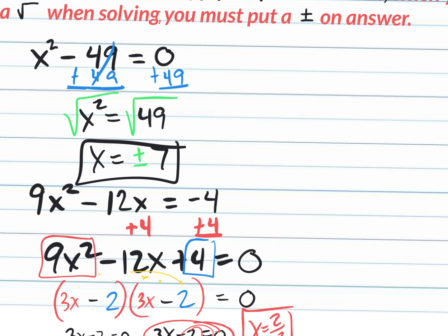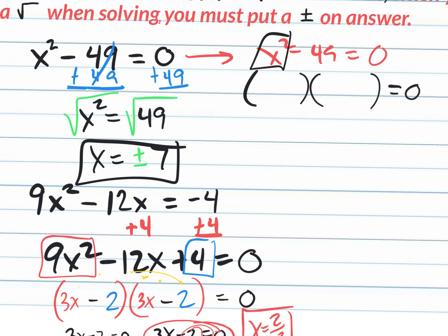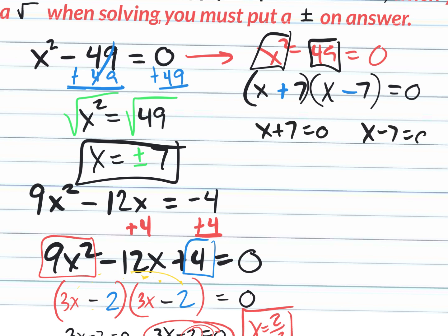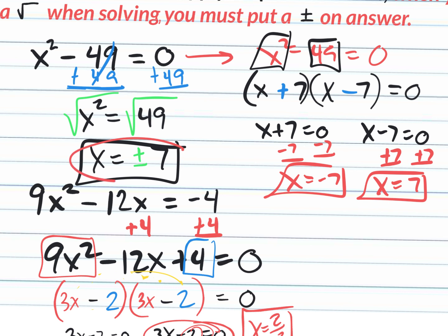Using the factoring method on x squared minus 49 equals 0: the square root of x squared is x and the square root of 49 is 7, so we get (x plus 7)(x minus 7) equals 0. With Zero Product Property: x plus 7 equals 0 gives x equals negative 7, and x minus 7 equals 0 gives x equals positive 7 — same as x equals plus or minus 7. Two different ways to solve the same equation.